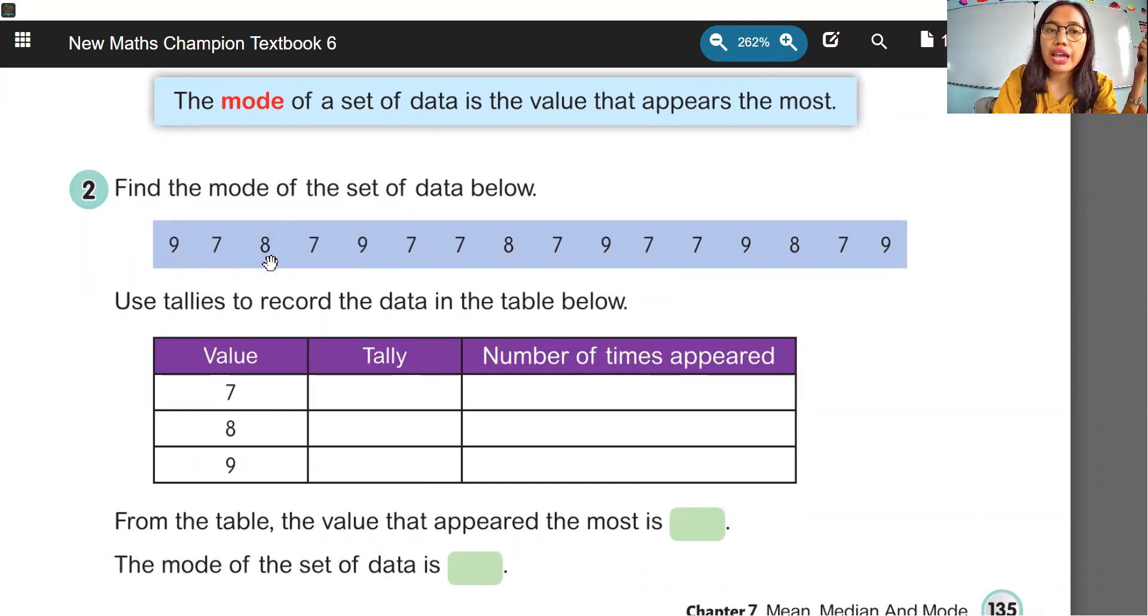We have 9, 7, 8, 7, 9, 7, 7, 8, 7, 9, 7, 7, 9, 8, 7, and 9. As you can see, from here, ada data yang muncul lebih dari 2 kali. Bahkan ada yang muncul 3 kali atau beberapa kali. So, it means we can count, we can have a tally in here to count how many numbers that appear.